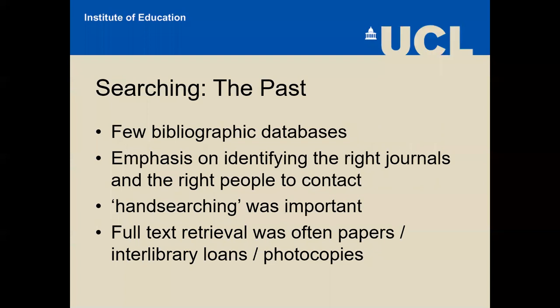I'm going to go through the various stages of a systematic review — searching for studies, screening, mapping, data extraction, risk of bias assessment, synthesis — and think about where we were and where we are. Those of you who have been in the business as long as me will remember the past: there were relatively few bibliographic databases, and there was a heavy emphasis on identifying the right journals and the right people to contact in order to find relevant studies. Hand searching was very prevalent — we would literally go to the journals in the libraries and look through them by hand. Full text retrieval meant actually going to get physical papers, photocopies; we used to travel around London from library to library to get papers for reviews.